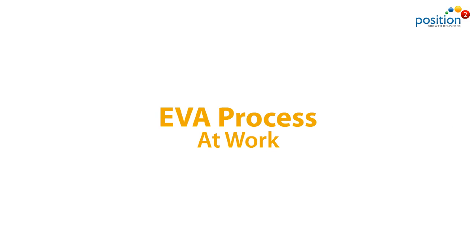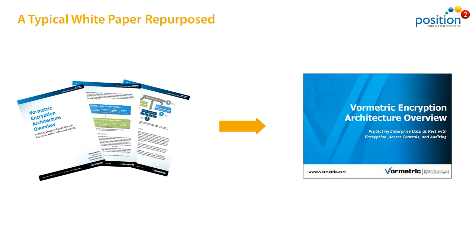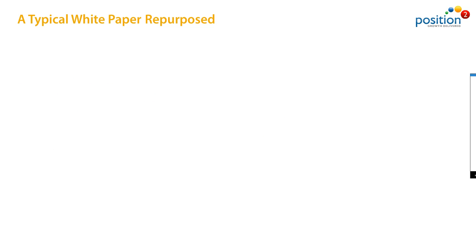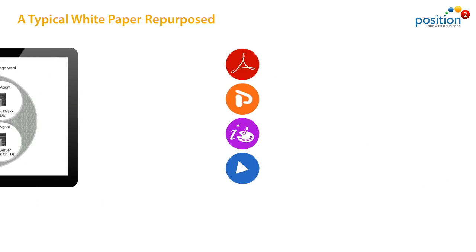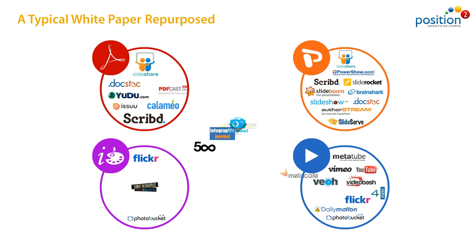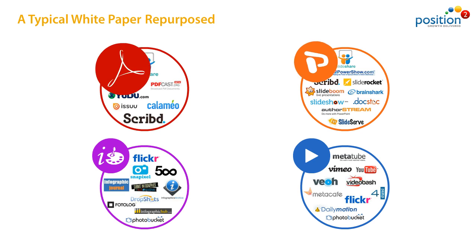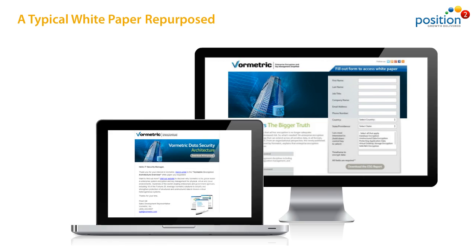Here's a live example of the EVA process at work. We start with a white paper, convert it into an appealing 10-slide PowerPoint presentation, and adapt it to a video with voiceover. The repurposed assets are distributed across document, video, and infographic-sharing sites. To help promote the assets, we create custom emails and landing pages.